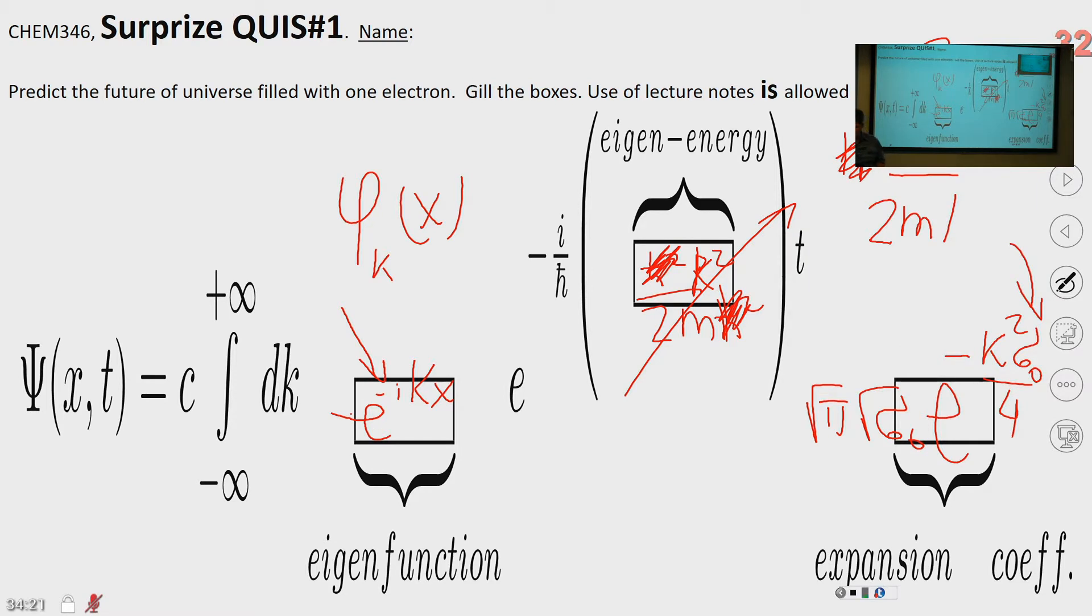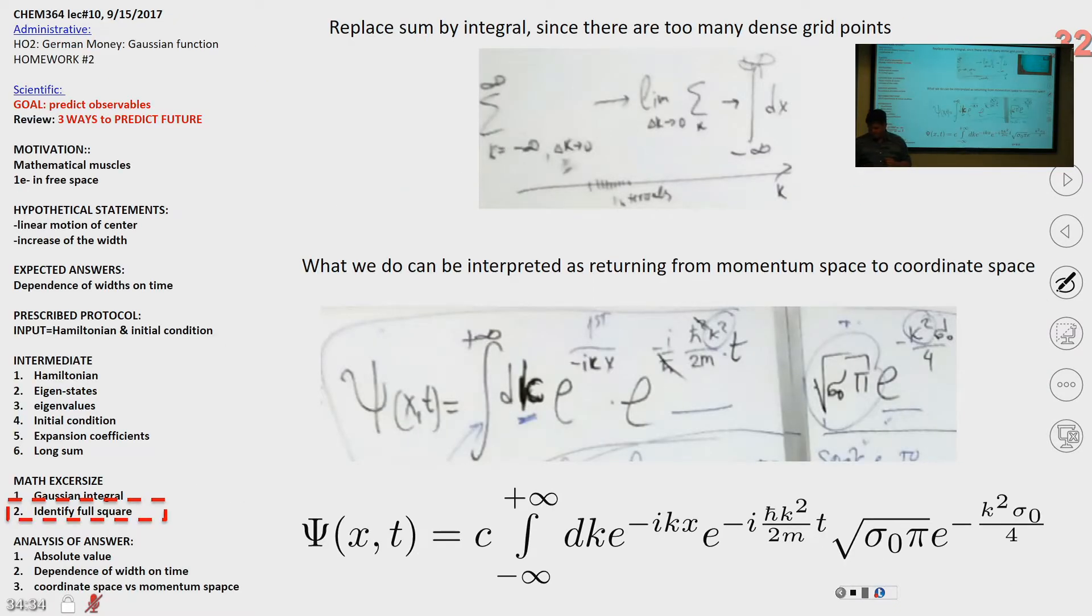See, here is h squared, and here is h. You can cancel it and have h to the power one. The function, phase accumulation, expansion coefficient. So, any suggestions how to take this integral?